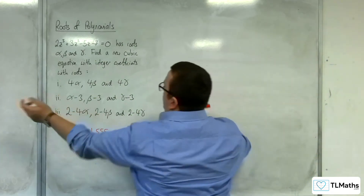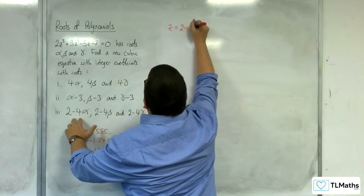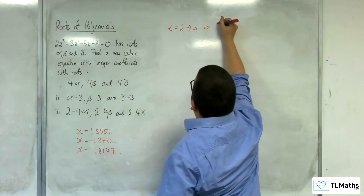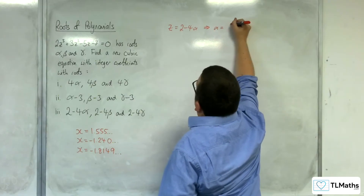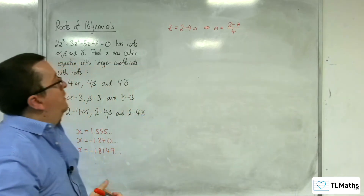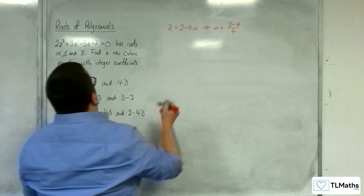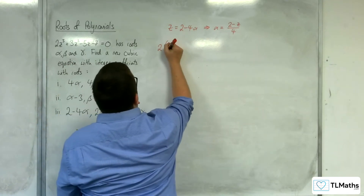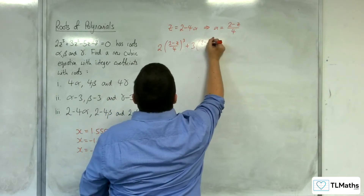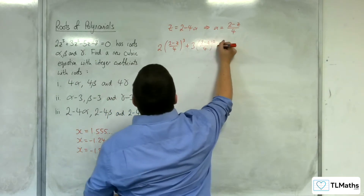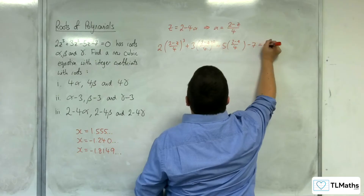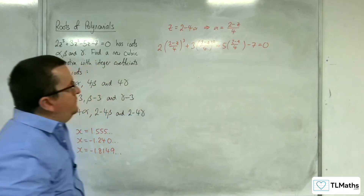Last one. So z equals 2 take away 4 alpha. If I rearrange that, we get alpha equals 2 take away z over 4. So I'm going to replace each of my terms with 2 take away z over 4: 2 lots of (2 take away z over 4) cubed, plus 3 lots of (2 take away z over 4) squared, take away 5 lots of (2 take away z over 4), take away 7 equals 0.